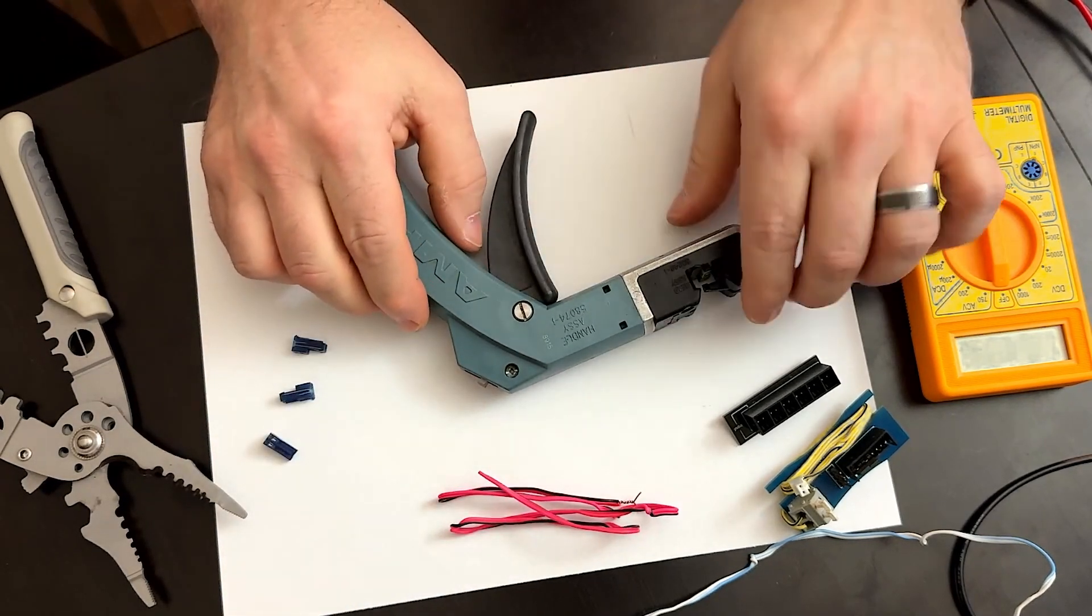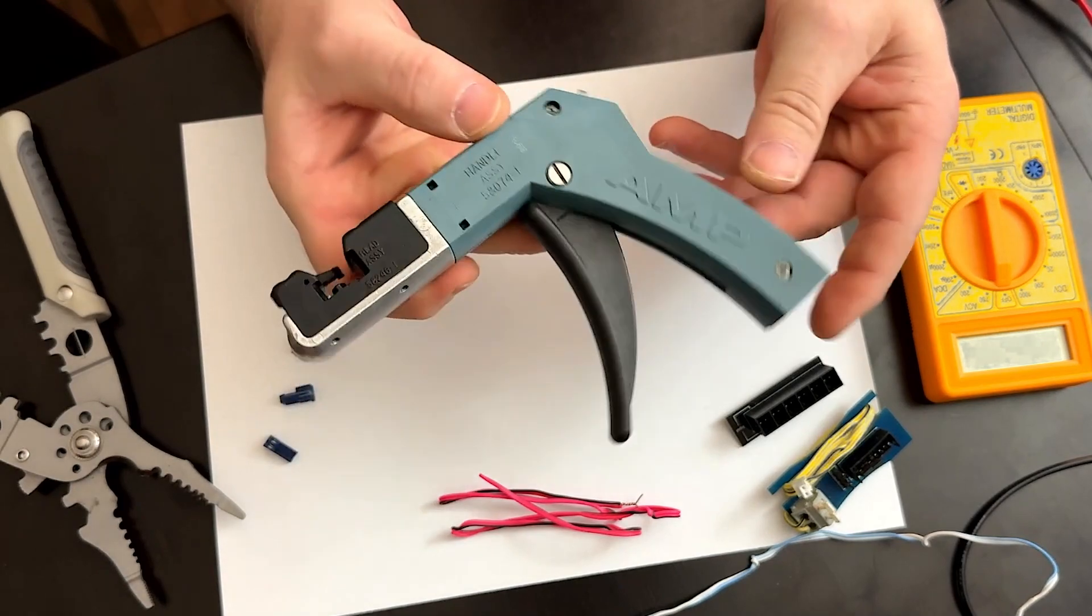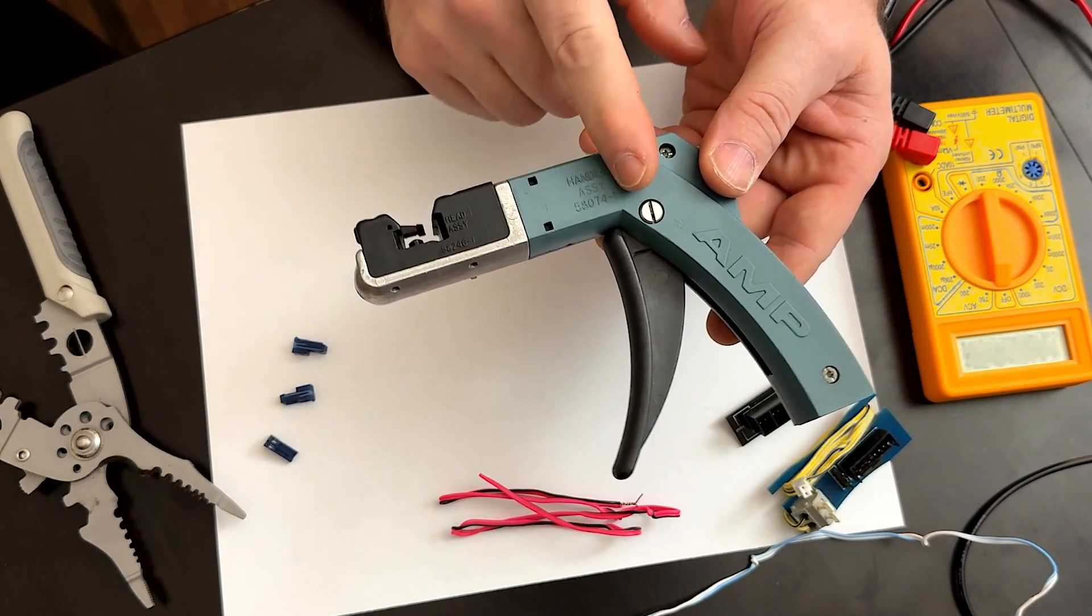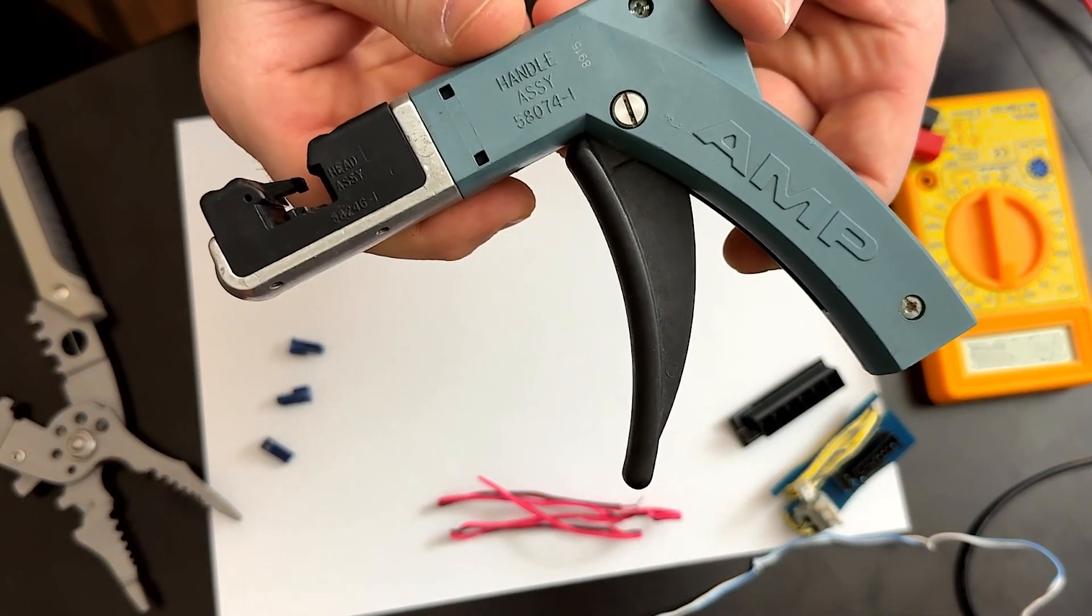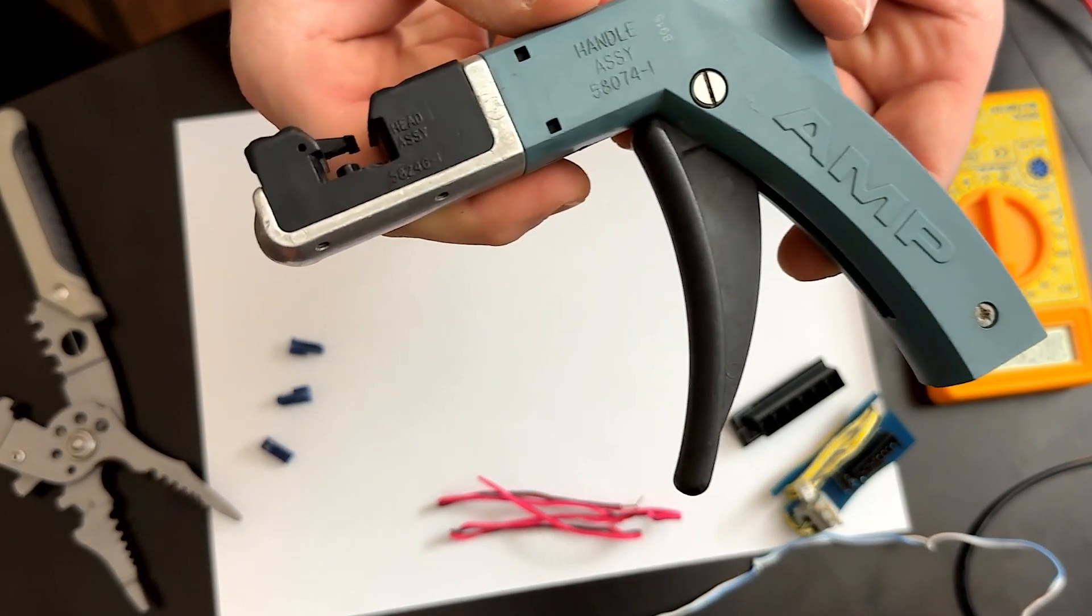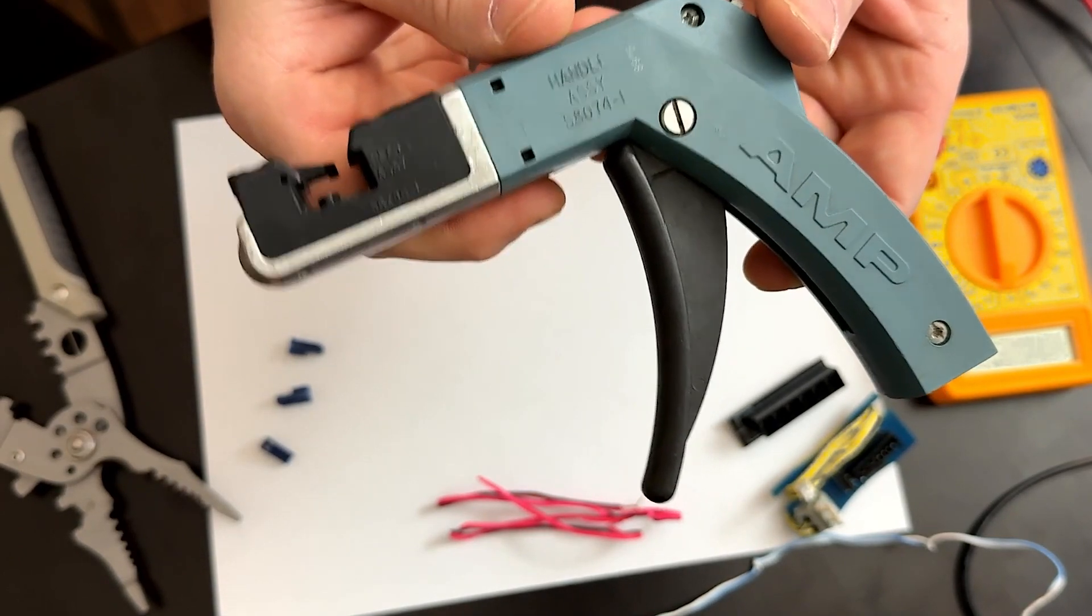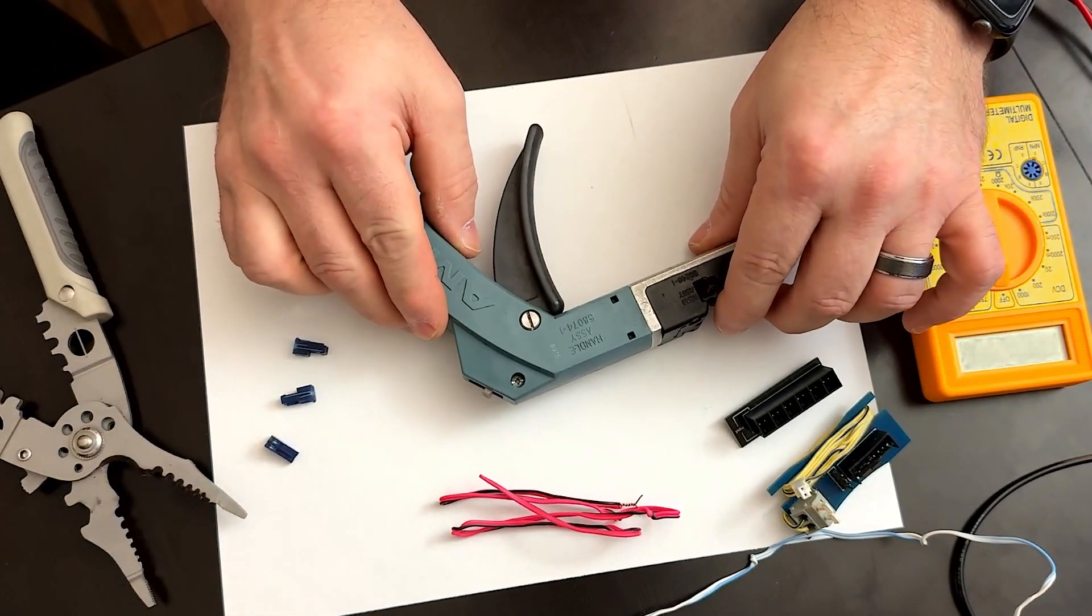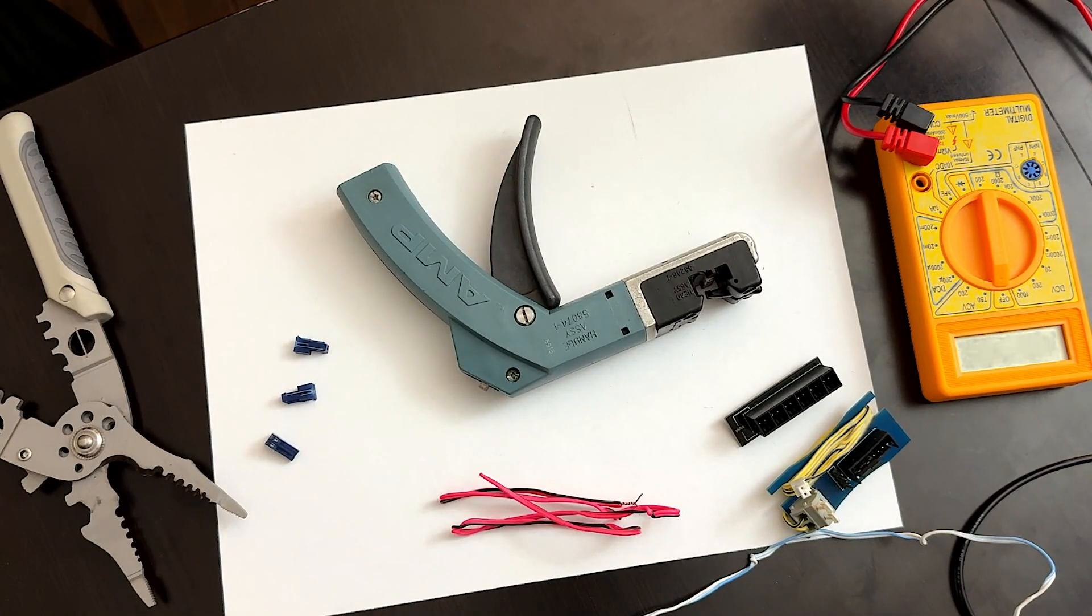So let's talk about part numbers real quick. This is sold in two parts. So this is the head assembly and the handle assembly. And the handle assembly part number is 58074-1, and the head assembly is 58246-1. And let's go on their website real quick, and we'll show you where to get these and how much they cost.